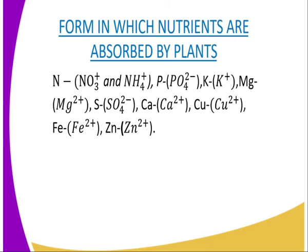The power 1 is the charge of the ion. Then calcium is also absorbed by the plant, and sulfur is absorbed in the form of sulfate ion, SO4 to the power 2 negative — that is the charge of the sulfate ion. Then calcium is also a macronutrient, absorbed in the form of calcium ions. The formula for calcium ions is Ca to the power 2 positive, which is the charge of the calcium ion.